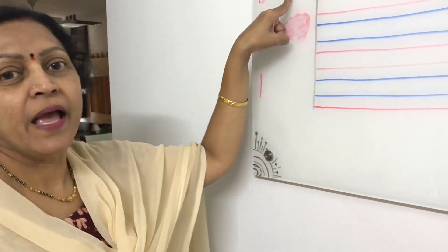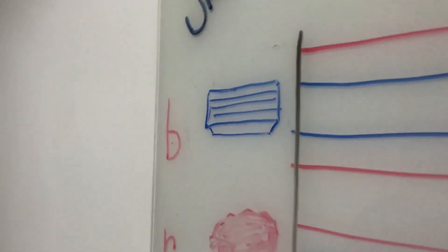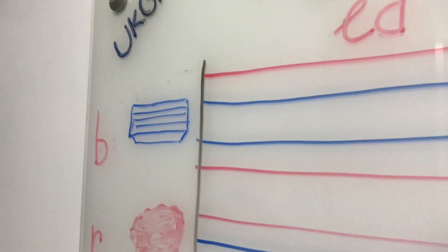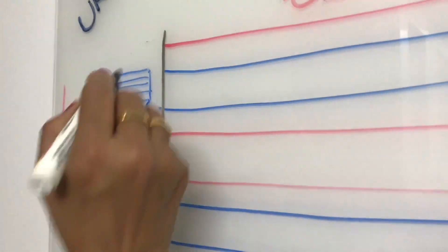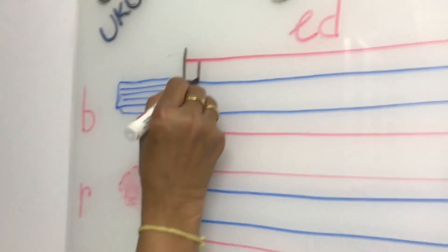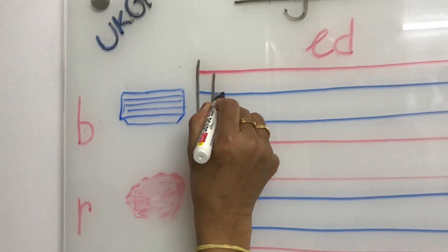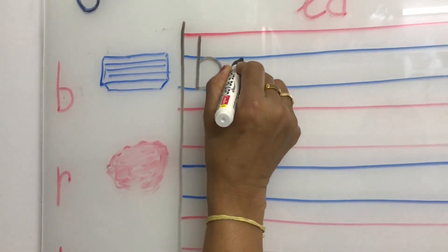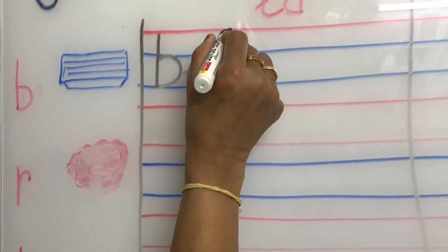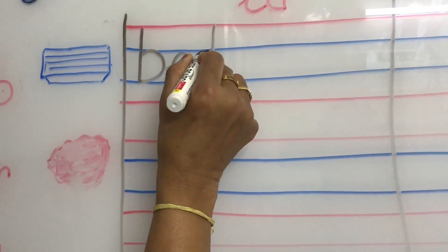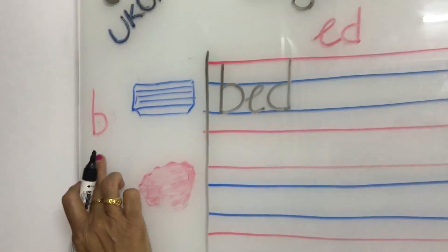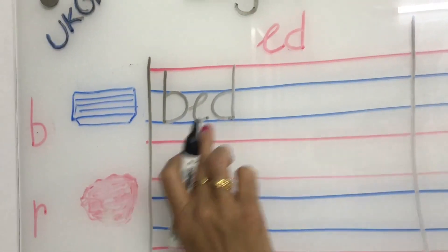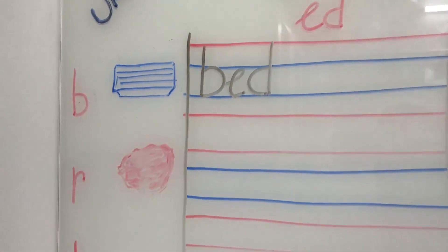See here — this is BED. Now we will write here: BED. B... E... D... BED. See, this is B. When you join this letter to ED it will become BED.